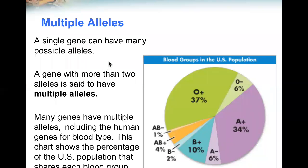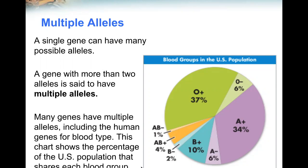A single gene can have many possible alleles. A gene with more than two alleles is said to have multiple alleles. Many genes have multiple alleles, including the human gene for blood type. This chart shows the percentage of the U.S. population that share each blood group: O positive and A positive are the most common two types, and the rarest is AB negative.